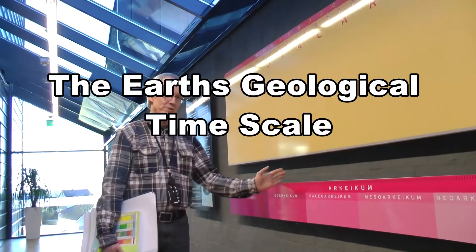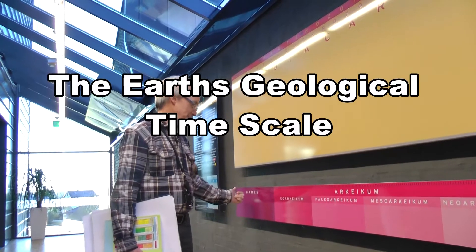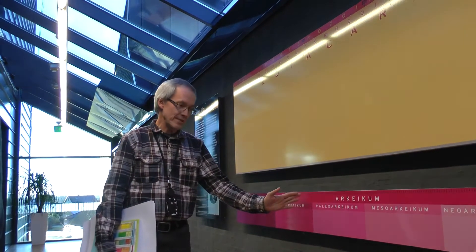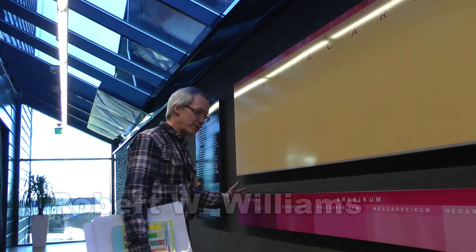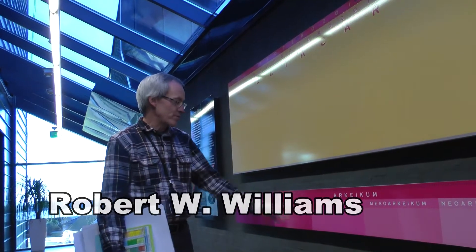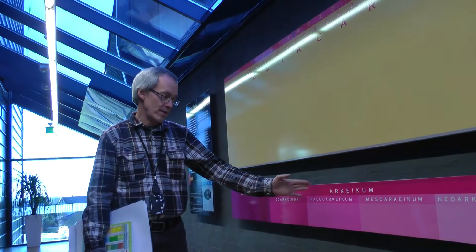The Earth's geological timescale: 4.6 billion years of history. Every millimeter on this scale is 1 million years, so 4.6 billion years is 4.6 meters. The first life on Earth, the first evidence we have of life on Earth, is 3.5 billion years old.